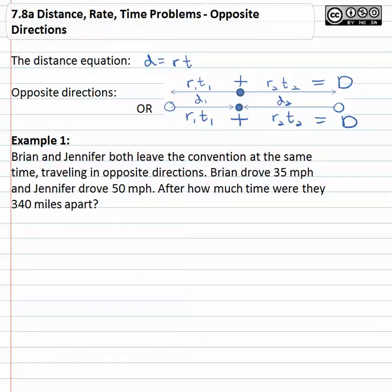That's a lot of letters and subscripts — let's just look at a problem. Brian and Jennifer both leave a convention at the same time traveling in opposite directions. Brian goes one way, Jennifer goes the other. Brian drove thirty-five miles per hour and Jennifer drove fifty miles per hour.